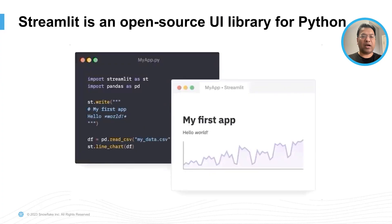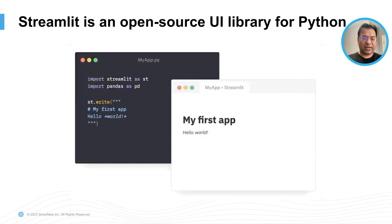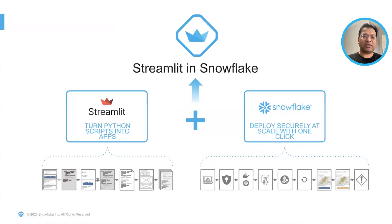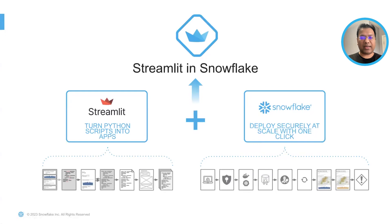Streamlit is an open source UI library for Python. It's highly popular — one of the simplest ways to create really beautiful data apps using Python itself, used by thousands of Python developers. We're making it even better with Streamlit in Snowflake, which not only provides that rich Python ecosystem but also makes it easy to deploy on Snowflake with security and scalability, all with one click.